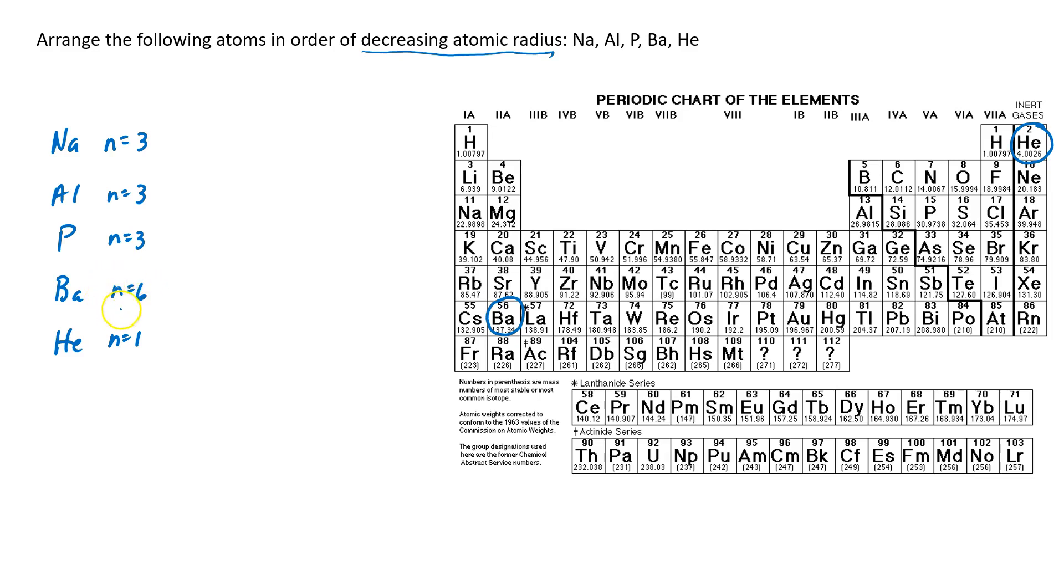That tells us that barium is the biggest and that helium is the smallest. Now to determine the size of the remaining three, look at the atomic number. So sodium has an atomic number of 11, aluminum is 13, and phosphorus is 15.